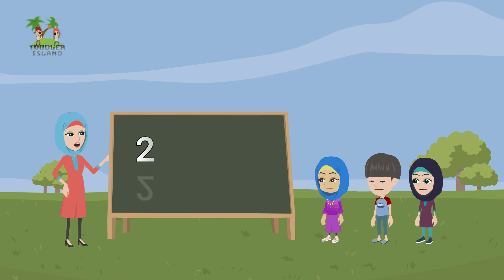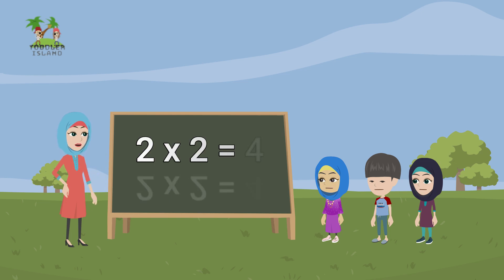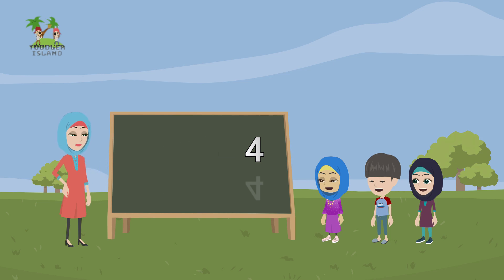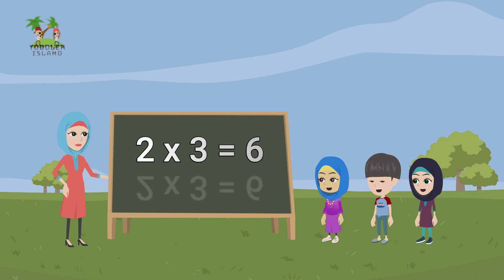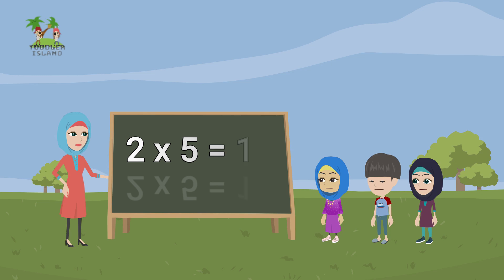Let's dive in. Two ones are two, two twos are four, two threes are six, two fours are eight, two fives are ten, two sixes are twelve.